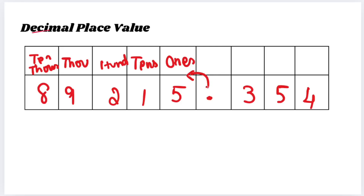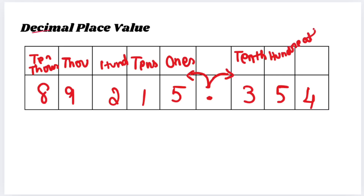We have finished the left side. Now we will go towards the right of the decimal point. Towards the right of the point, we call the first number the tenth place — T-E-N-T-H. Then the number 5 will be in the hundredth place. Last will have the suffix TH — so hundredth, then thousandth.